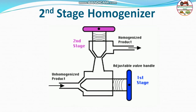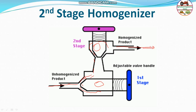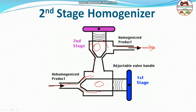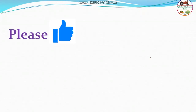If a second stage homogenizer is used, the milk moves from the first stage valve to the second stage valve, where fat globules are broken again, yielding a better homogenized product at the outlet. Generally the second stage homogenization is used when better homogenization is needed. I hope you understand — please like and subscribe to my channel.